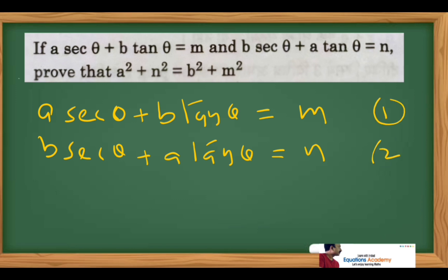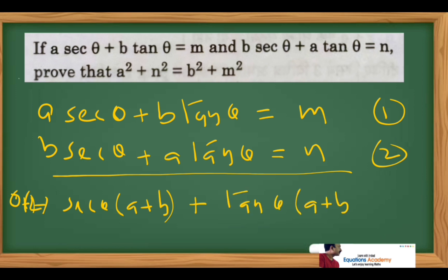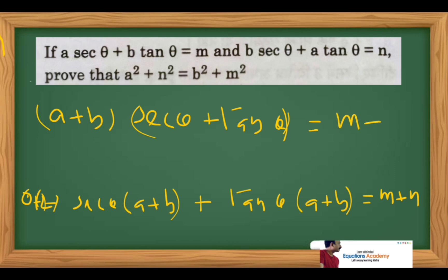If we add equation 1 plus equation 2, we get a·secθ + b·secθ + b·tanθ + a·tanθ. Taking secθ common gives secθ·(a + b), and taking tanθ common gives tanθ·(a + b). So a + b is common: (a + b)·(secθ + tanθ) = m + n. Keep this as equation 3.